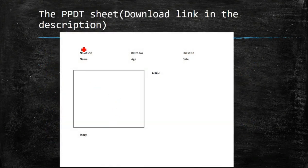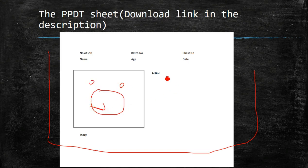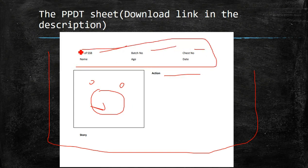Then a sheet is given to you to write the story. This is the place where you show what characters are there, and here you write the action. When you join an SSB you will get a badge number and your chest number — all these things will be told to you. I'm giving this sheet to you for free; you can download it from the link given in the description below.